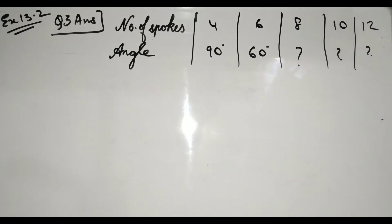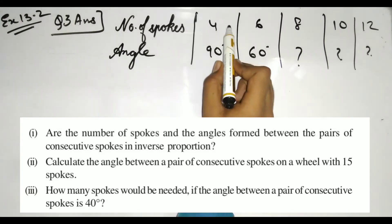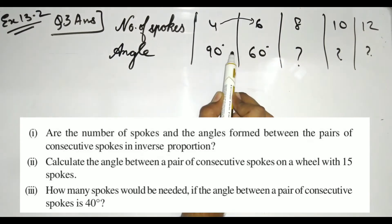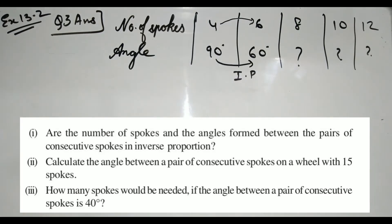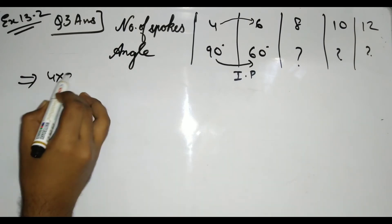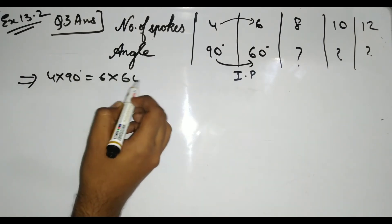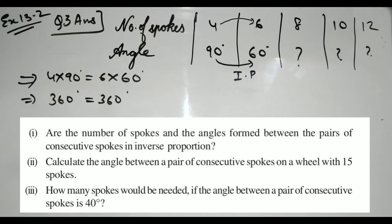We can directly observe: as the number of spokes increases from 4 to 6, the angle decreases from 90° to 60°. One quantity is increasing while the other is decreasing — so it is obviously inverse proportion. We can verify: 4 × 90 = 360 and 6 × 60 = 360, so LHS = RHS, confirming inverse proportion.